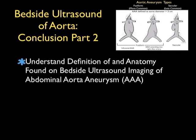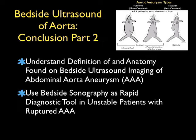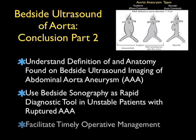In conclusion, thanks for joining me for this SoundBytes module on part two of bedside ultrasound of the aorta. Through this module you now understand the definition and anatomy found on bedside ultrasound imaging of an abdominal aortic aneurysm, and can use bedside sonography as a rapid diagnostic tool for picking up a AAA. Remember that if the patient has unstable hemodynamics and a large AAA is seen on bedside sonography, that patient must be assumed to have a rupturing AAA. Using bedside sonography we can facilitate timely operative management and possibly save a life.